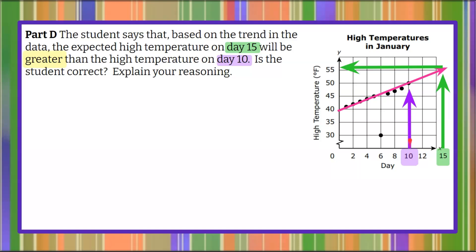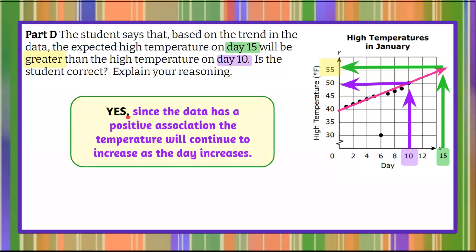Now we're going to come over to day 10, go up to our data, and we have a data point for that one, and go over to the temperature. So what we want to see here is that if our positive association continues, right, our line is trending up, then on day 15, our temperature would be 55 degrees, which is indeed greater than day 10's temperature of 50. So we can conclude that yes, since the data has a positive association, the temperature will continue to increase as the day increases.